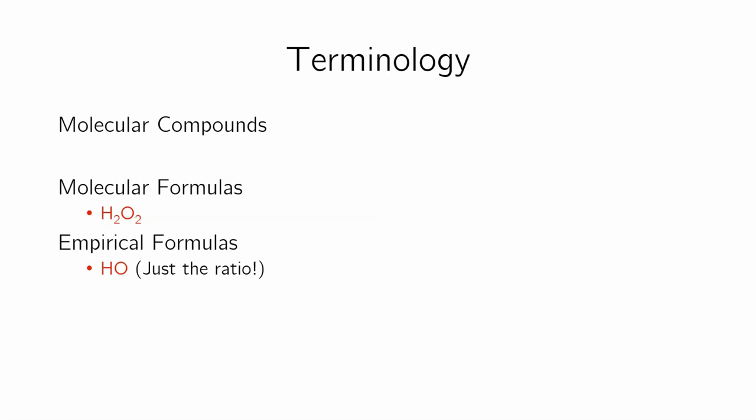You have empirical formulas. These are just taking the smallest ratio possible here. So H2O2, the smallest ratio would be HO. I'll give you examples in a second.